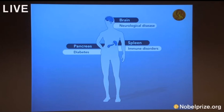Defective vesicle transport occurs in a variety of diseases, including a number of neurological and immunological disorders, as well as in diabetes. The 2013 Nobel laureates have discovered a fundamental process of cell physiology, and their discoveries have had a major impact in advancing the understanding of the machinery regulating vesicle traffic — a major transport system in the cell.